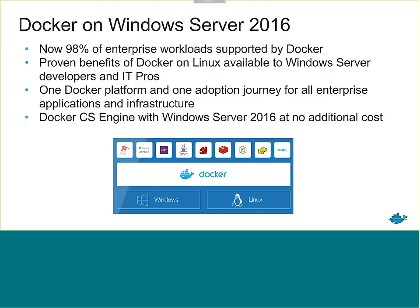If you get Windows Server 2016 with support from Microsoft, it comes with the Docker commercially supported engine at no extra cost. So if you have a problem with Docker running on Windows Server 2016, you can call Microsoft. If they can't figure it out, they can escalate to Docker. The diagram shows how Docker sits on top of both Windows and Linux, giving you a common API and common set of tools for managing both Windows and Linux workloads.